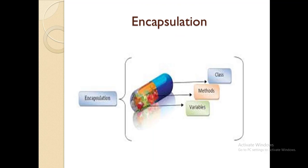Another example of encapsulation is a capsule. When all data members and member functions are combined in a single unit called a class, this process is called encapsulation — wrapping the data together with the functions that manipulate them. In the real world, just as all medicines are encapsulated in a capsule, in OOP, classes, methods, and variables are encapsulated within the class.